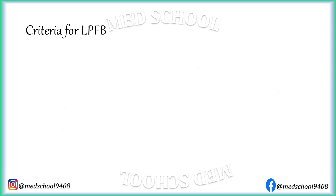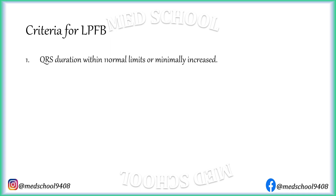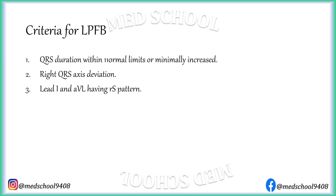The criteria for left posterior fascicular block are: QRS duration within normal limits or minimally increased; right QRS axis deviation; leads 1 and AVL having an RS pattern; and leads 2, 3, and AVF having a QR pattern.